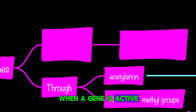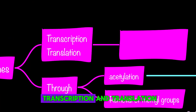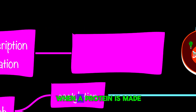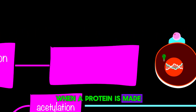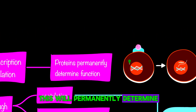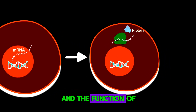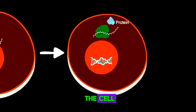When a gene is active, it gets expressed by transcription and translation. When a protein is made, this will permanently determine the structure and the function of the cell.